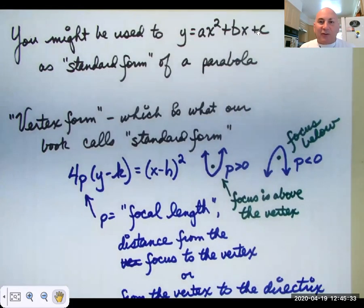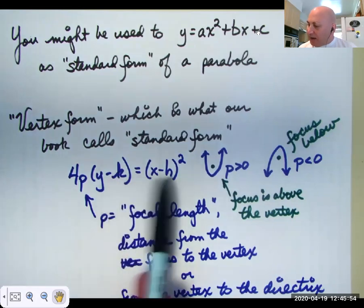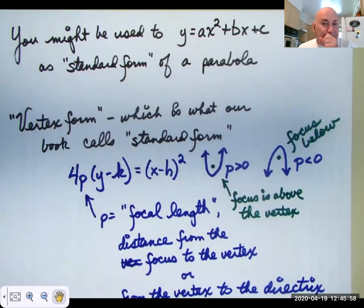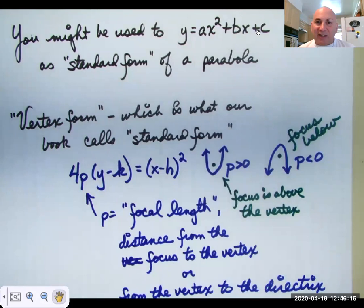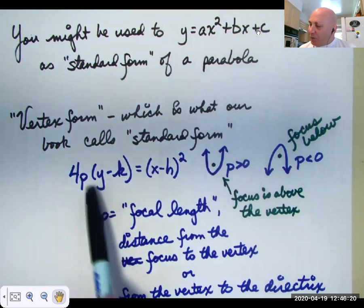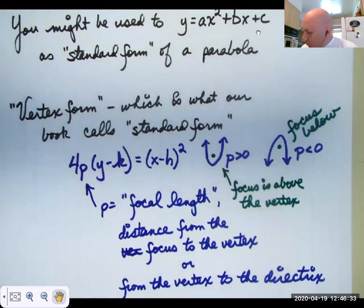Most of us are used to y equals ax squared plus bx plus c as the standard form of a parabola. The textbook currently being used here uses what other books call vertex form for the parabola — that's x minus h and y minus k, where h and k represent your vertex. We have this value of 4p along with the y, and p is your focal length — that's the distance from the focus to the vertex.